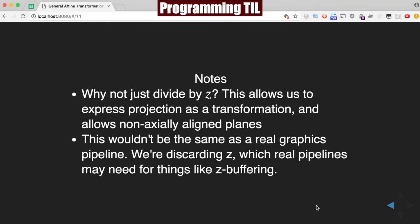Note that this isn't what you would necessarily use in real graphics pipelines, because we're going to be discarding the z value in this instance. And a lot of times, you're going to want to keep the z value for things like z buffering.